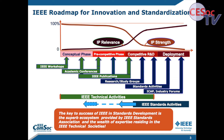At the beginning of a technology, we can think of a conceptual phase. IEEE at this point will be putting on workshops and academic conferences and publications like the IEEE Communications Magazine. Then as the technology moves into a pre-competitive stage, we have research and study groups, and IEEE technical activities like the Future Directions Group can take a lead and push that forward.